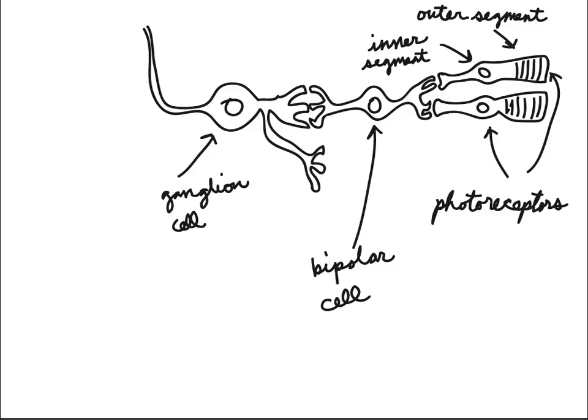If the ganglion cell sends signals, then those signals will be transmitted to the brain. If the ganglion cell does not send signals, then no information leaves the retina to go back to the brain. The signals that are going to the brain will be taken along this axon that comes off of the ganglion cell.